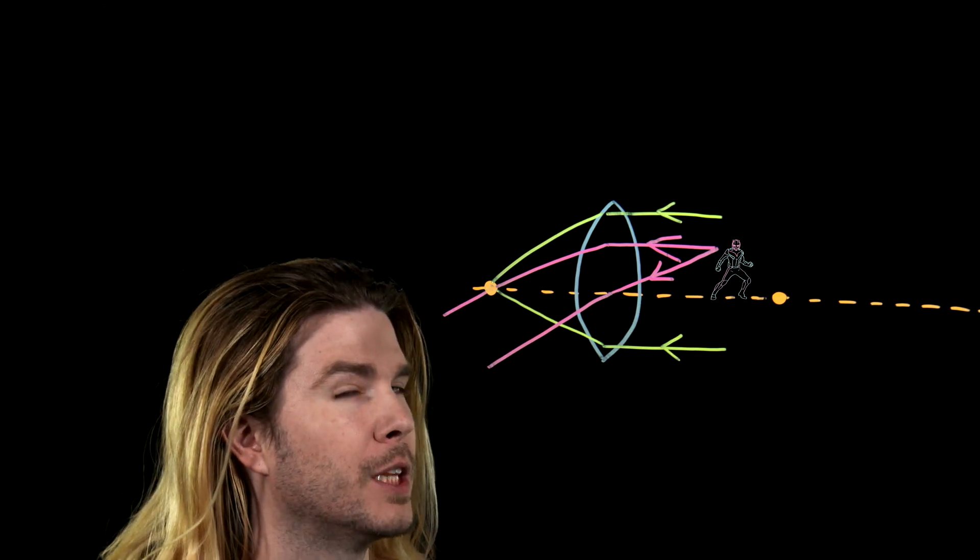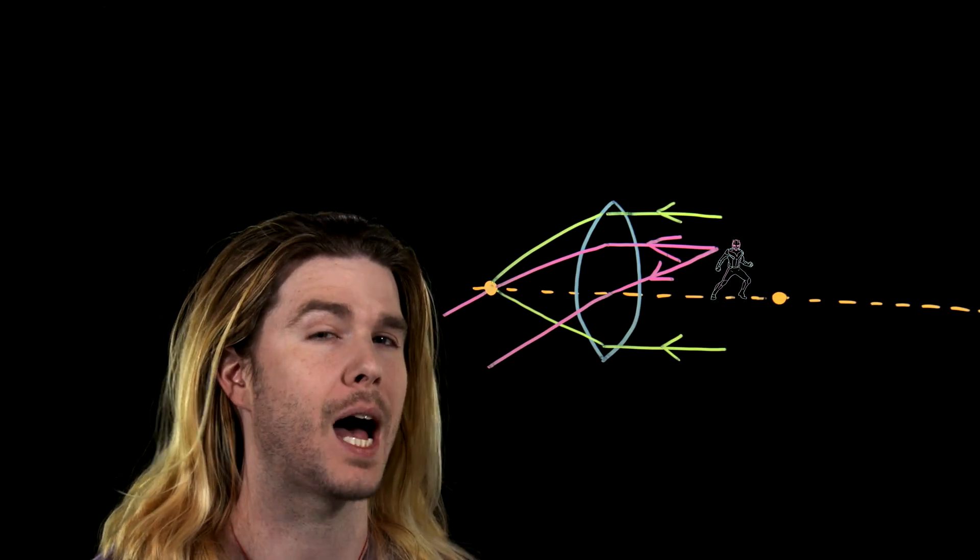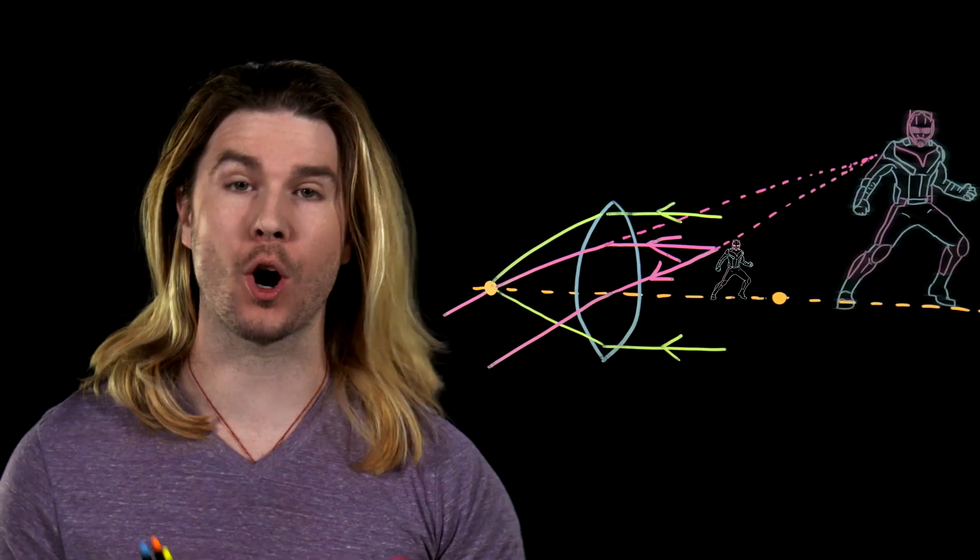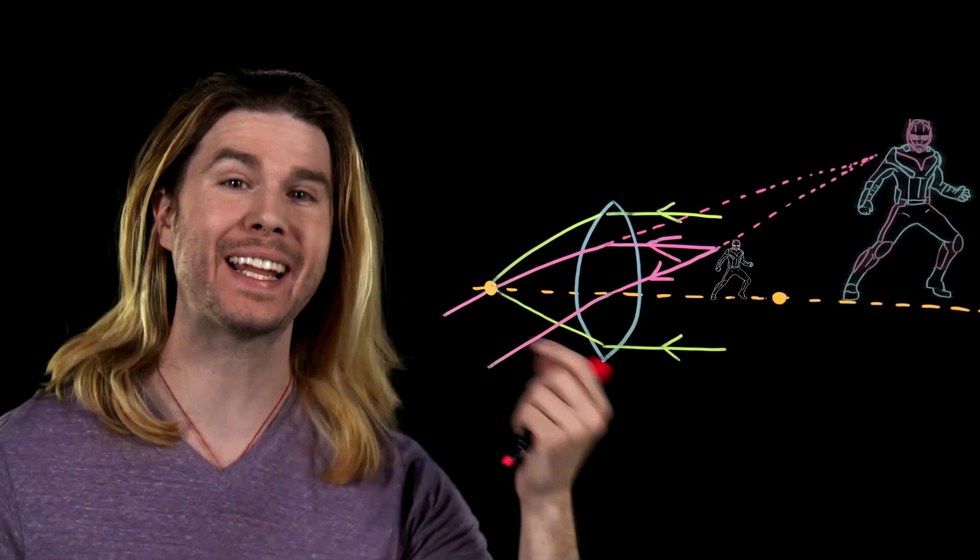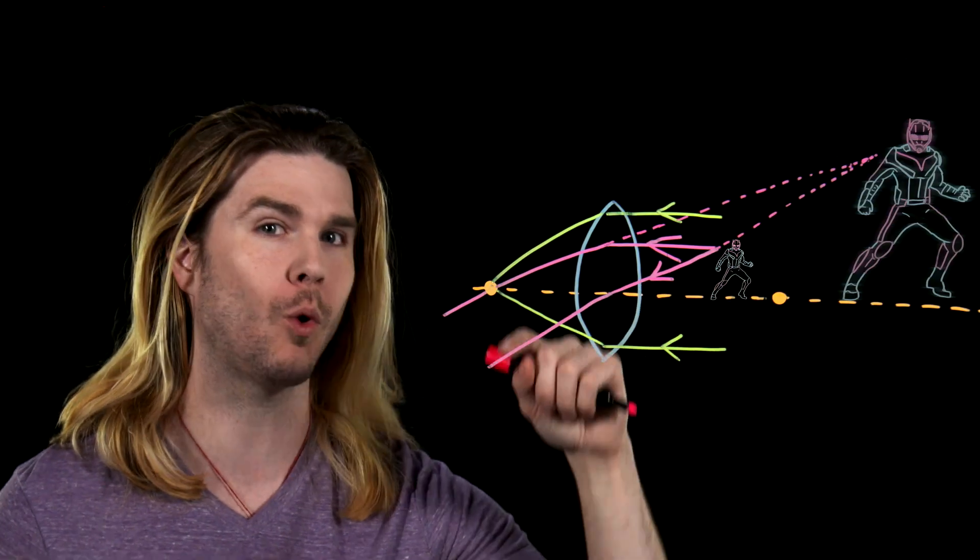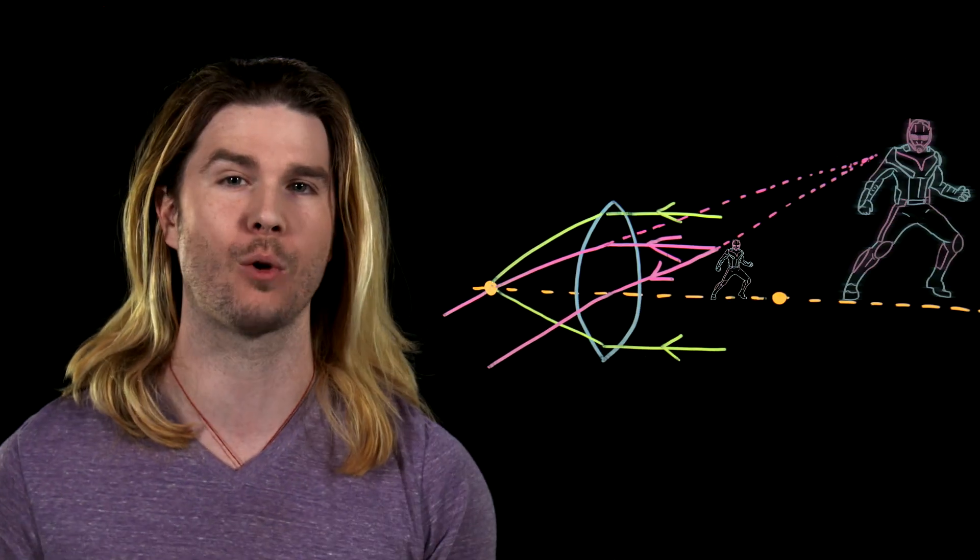Now, if I was an observer looking through this magnifying glass at this object, what would I really see? When we see light, our brains have evolved to assume that that light is traveling to us in straight lines even if that's not really what happened, if there was some weird physics going on.